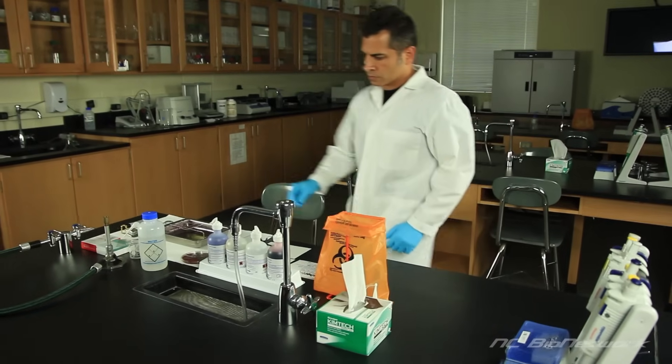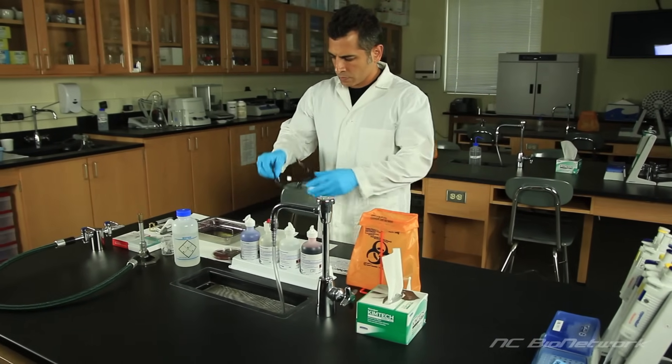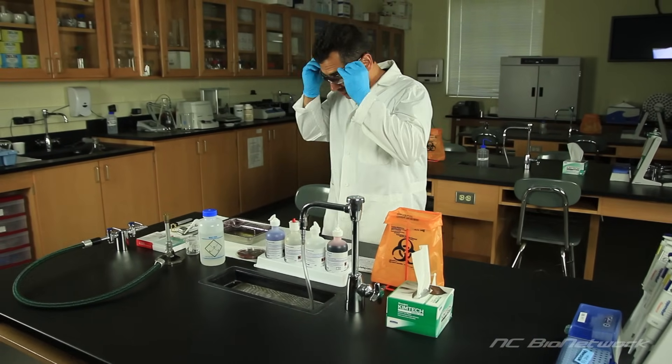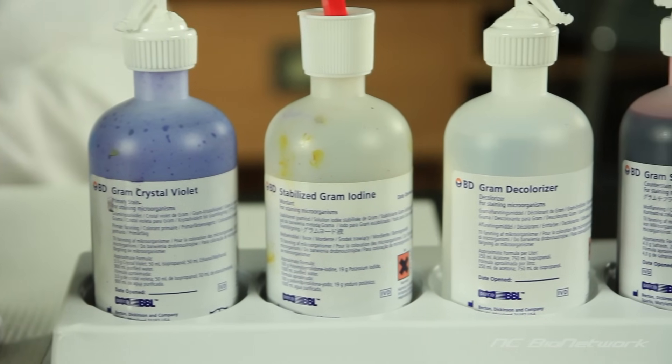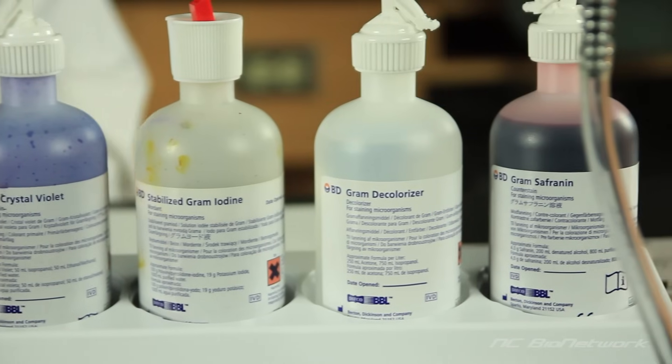Applying a simple stain to a bacterial culture is a technique used for examining the size, shape, and arrangement of a specimen. It uses a dye to stain the cells, making them easier to see under a microscope.